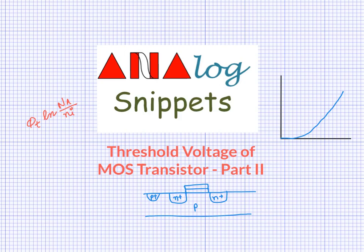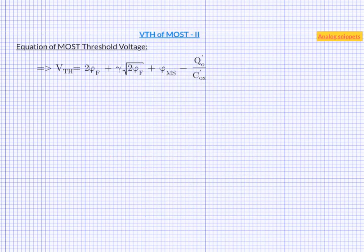Hello, in the last video we derived the threshold voltage equation of an NMOS transistor. In this video we will look at this equation in some more details. NMOS and PMOS both have this same threshold voltage equation. In case of PMOS either a few terms are negative or they have different values.